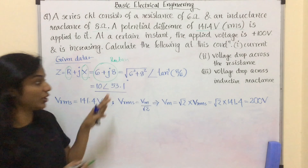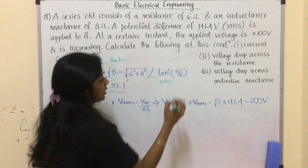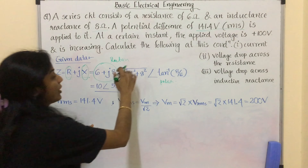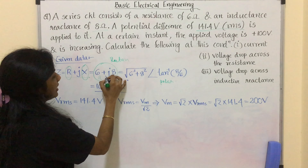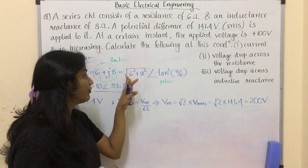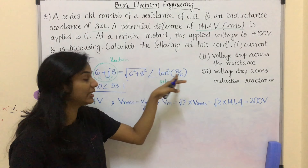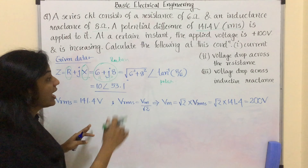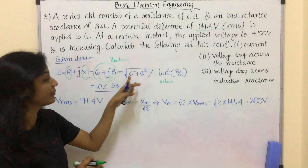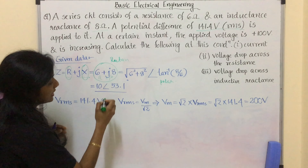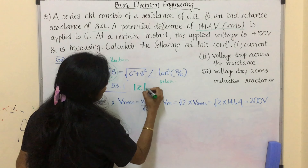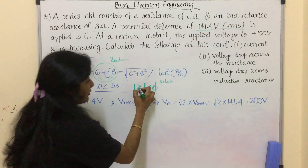In order to convert to polar form, we use the formula: for A + jB, the magnitude is √(A² + B²) at angle tan⁻¹(B/A). Replacing A with 6 and B with 8, we get the impedance as 10∠53.1° ohm.